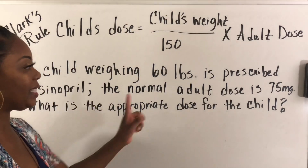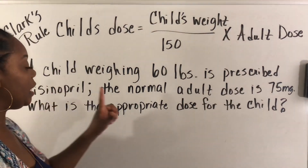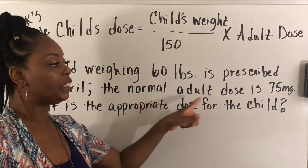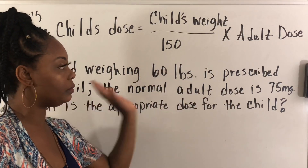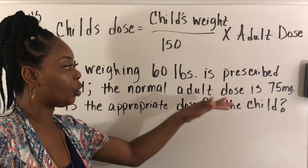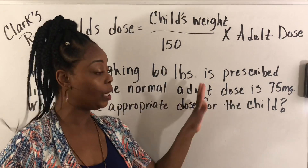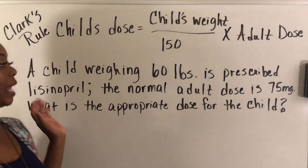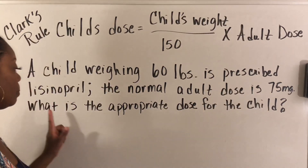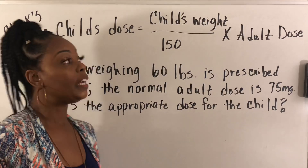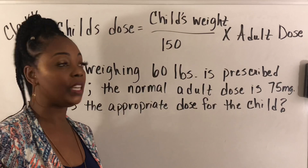Let's work out problem one. A child weighing 60 pounds is prescribed lisinopril. The normal adult dose is 75 milligrams — I'm just making these numbers up. What is the appropriate dose for the child? We need to go into this word problem and pull out everything we need.